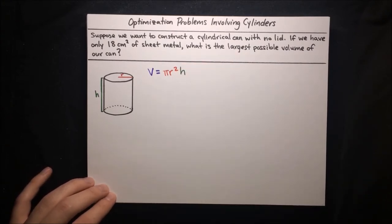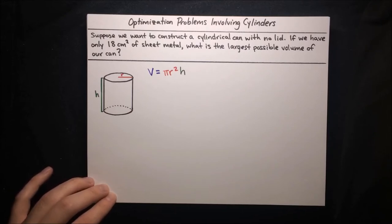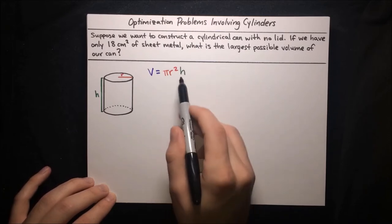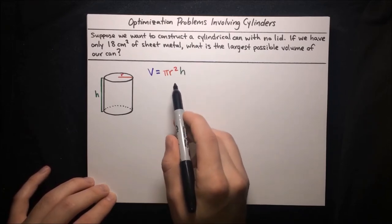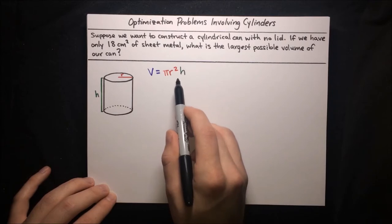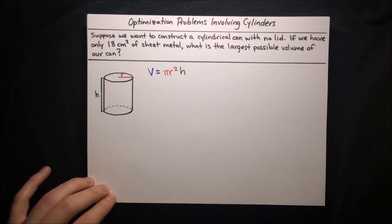Now we want to maximize this volume, and in order to do that, we need to turn this into a function of a single variable. So we need to get some other equation relating r and h that we can use to solve for one of these variables in terms of the other, and then substitute it back into the volume formula. So let's think about what other information we have.